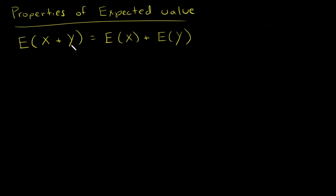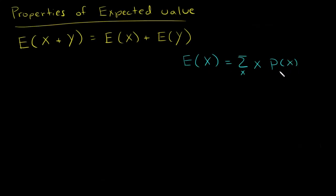If x and y are both random variables, in this video I'm going to show that the expected value of their sum is equal to the sum of their expected values. To do this, first I want to remind everyone: by definition, what is expected value? If x is discrete, it is the sum over x of x times the probability mass function of x. By definition, this is what expected value is.